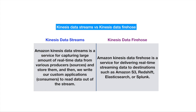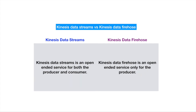Amazon Kinesis Data Firehose currently supports only four destinations for storing data: Amazon S3, Amazon Redshift, Elasticsearch, and Splunk. For Kinesis Data Streams, customers have the option of customizing their sources — that is, the data producers — as well as the consumers, and can write their own custom applications for reading data out of the stream. For Kinesis Data Firehose, customers don't have the option of customizing their destinations; the data is pre-configured to be sent to those fixed destinations.